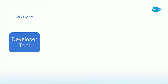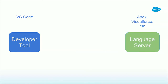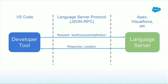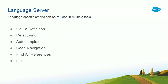You have your development tool on one side and your language server on the other. This can be for things like Apex, Visualforce, Aura, JavaScript, whatever you want. The communication happens through the language server protocol, which is basically just JSON-RPC. Your tool doesn't do anything other than ask for things - it's just doing requests, saying hey, I need this thing, tell me how to communicate it to the user. In this example, the tool says I need this definition, and the language server replies with the location on the file system, and you open it through your editor. The language server is where you code things like go-to-definition, refactoring, code navigation, all of these things.